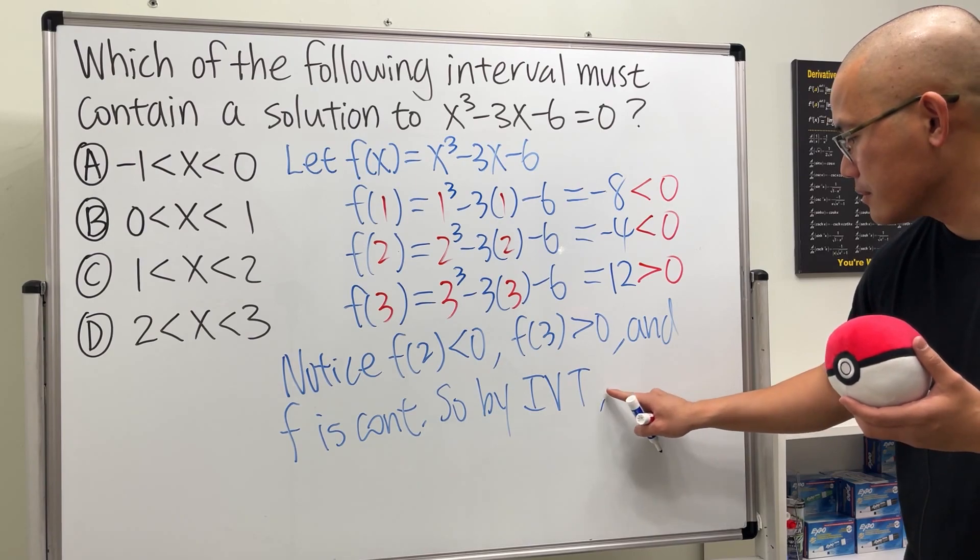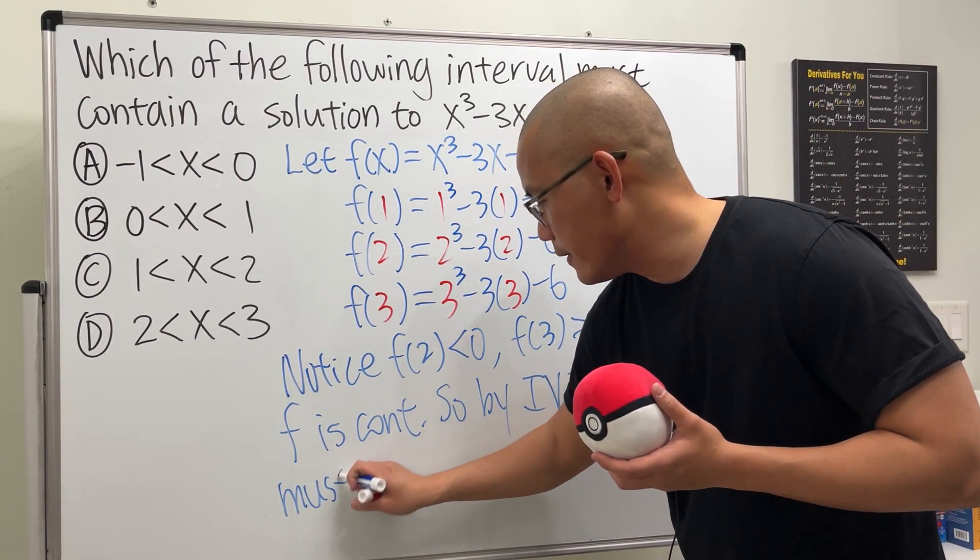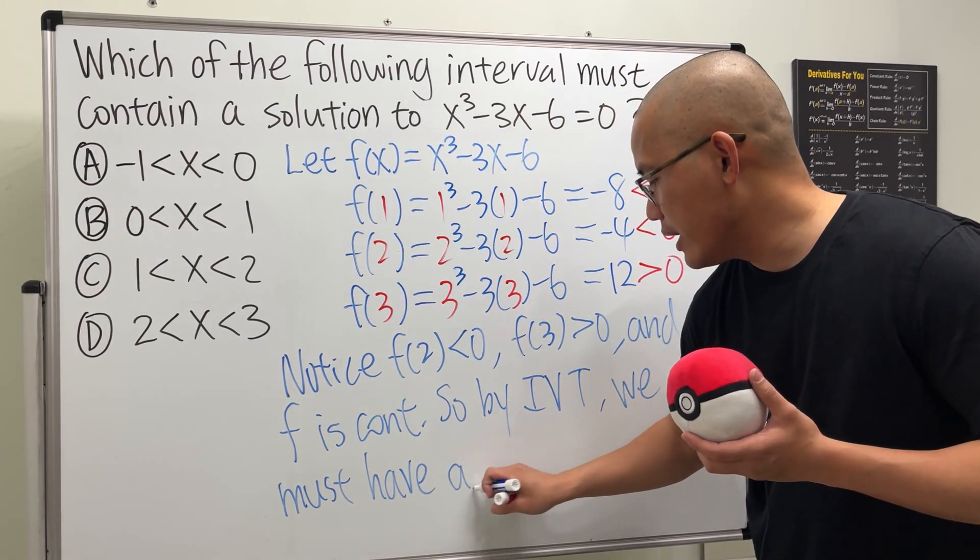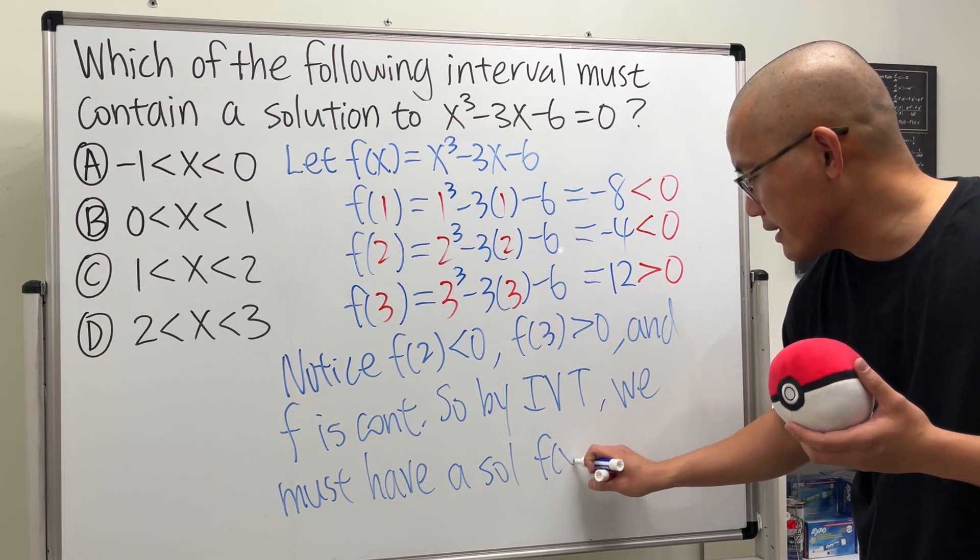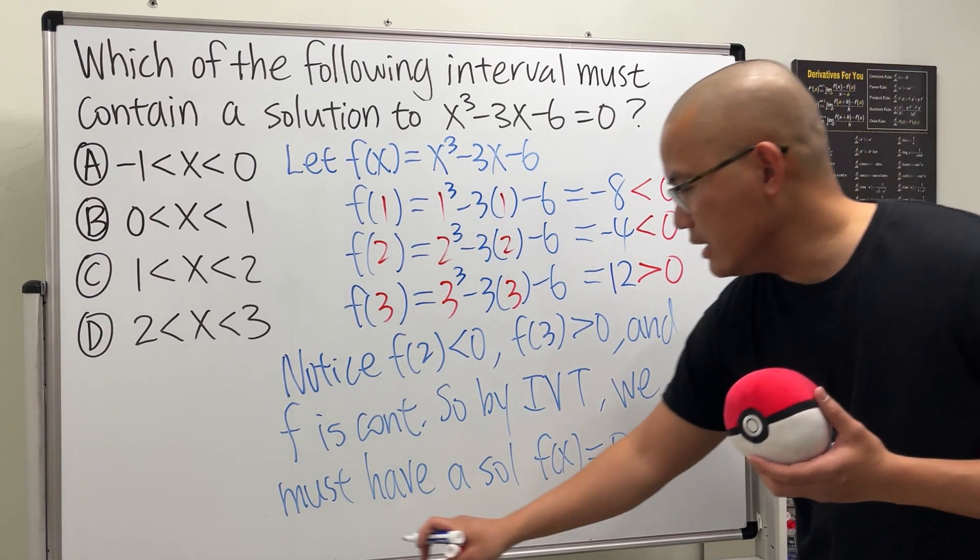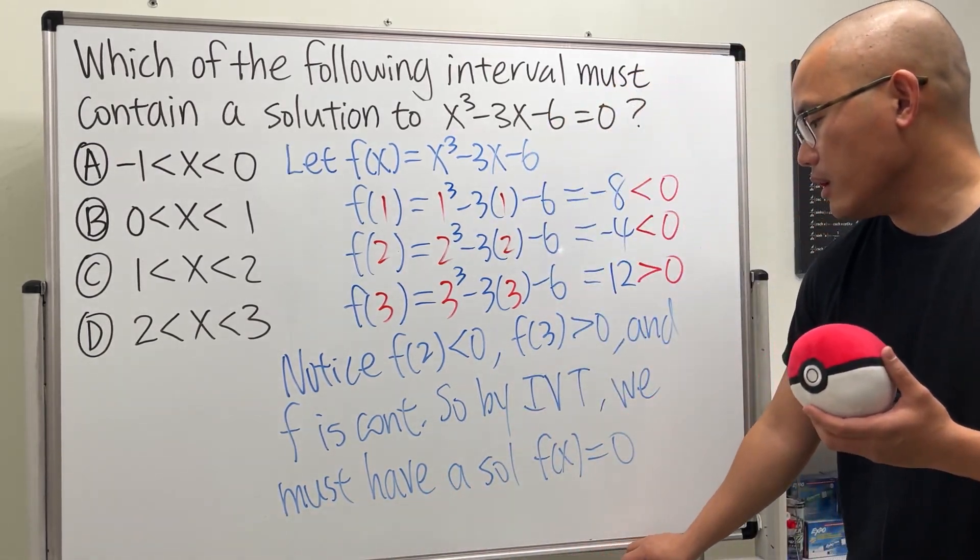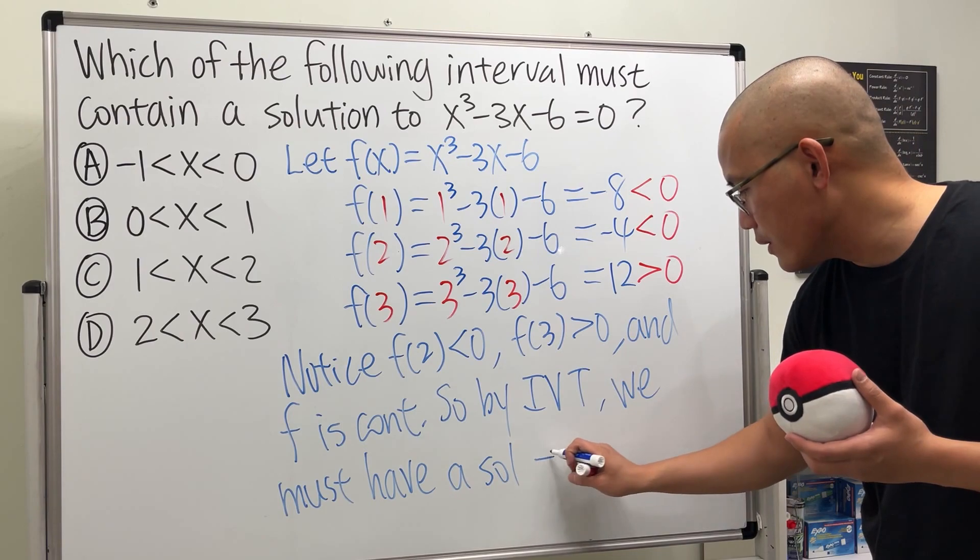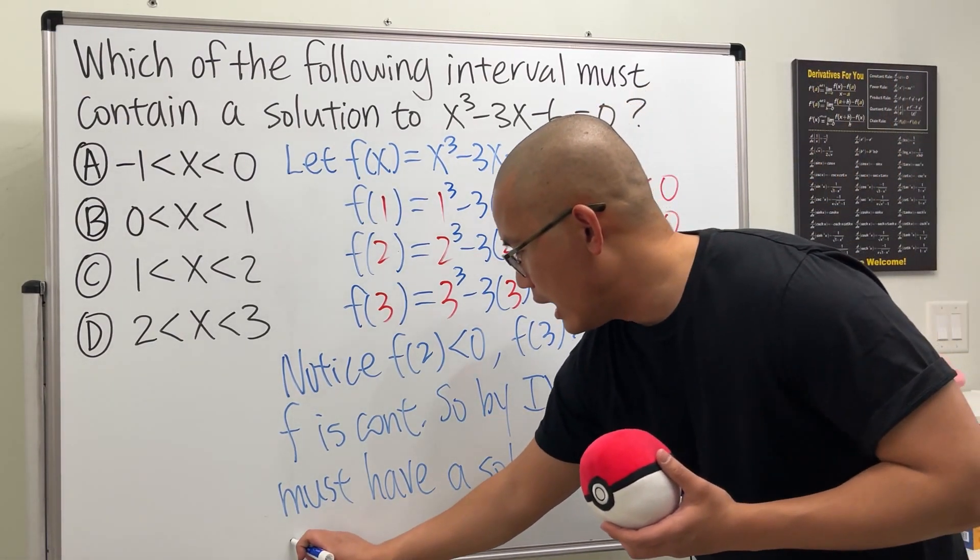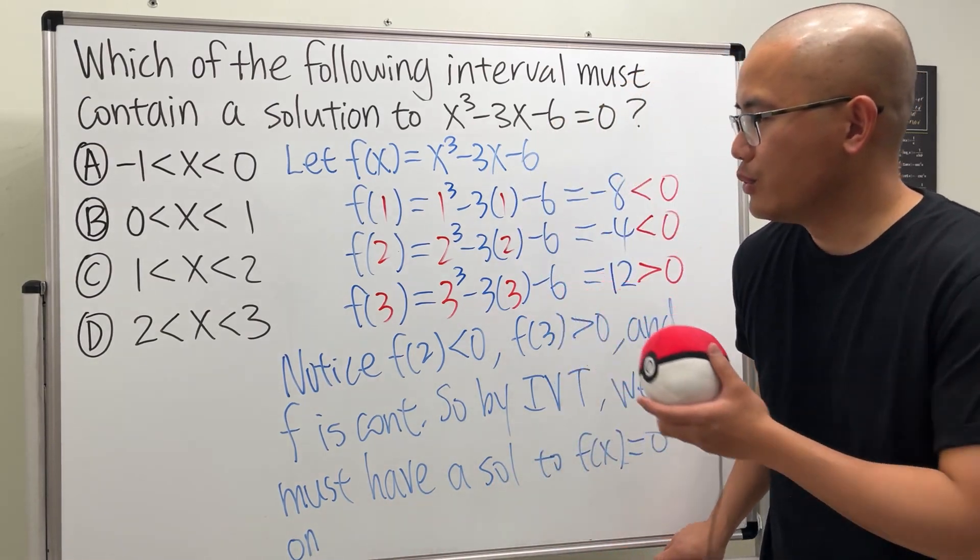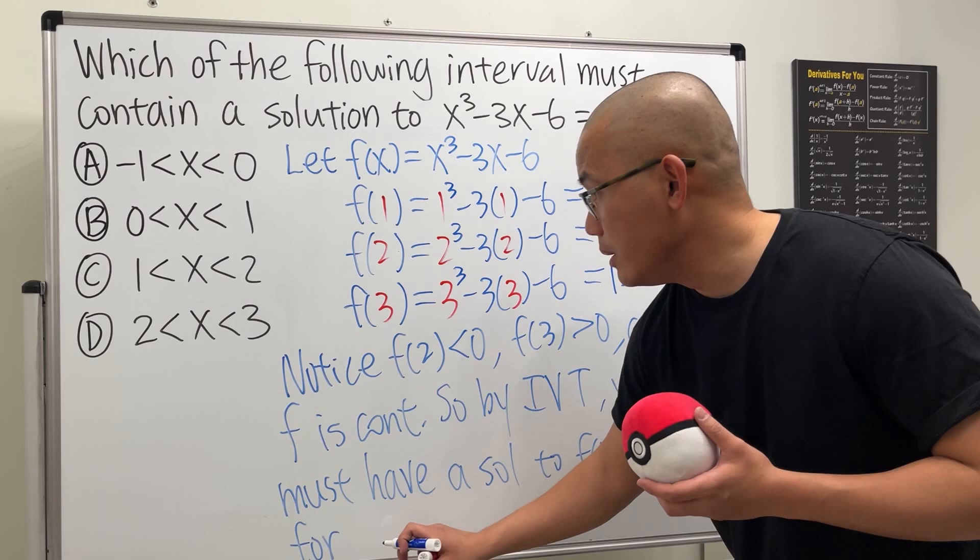We must have... Let me just say, we must have a solution f(x) is equal to 0. Well, on the interval, we must have a solution to the equation f(x) is equal to 0. On the interval, well, I use the inequality.